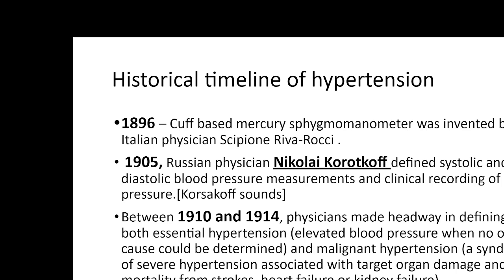Earlier, the only means of measuring circulatory pressure was by cutting a vessel and connecting it to a manometer, which was impractical clinically. The real correct method we use now — assessing the sound produced during pressure and assessing systolic and diastolic pressure — came in only in 1905, after Nikolai Korotkoff defined these pressures. So all information about circulatory hypertension is just around 130 to 140 years old — barely one and a half centuries.